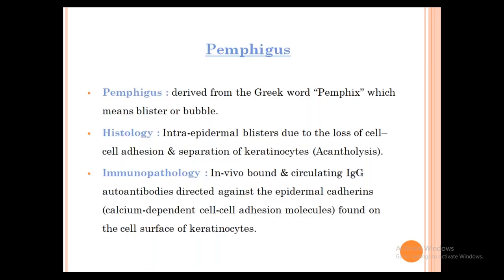Pemphigus comes from the word 'pemphix,' meaning to blister. These are blistering disorders with intra-epidermal blisters. In the Pemphigus group, whether Foliaceus or Vulgaris, the level of blisters is inside the epidermis. Autoantibodies break the cell adhesion between different keratinocytes — keratinocytes are connected by cell adhesions (cadherins), and the antibodies cause separation, making keratinocytes become rounded circular cells. This is known as acantholysis.